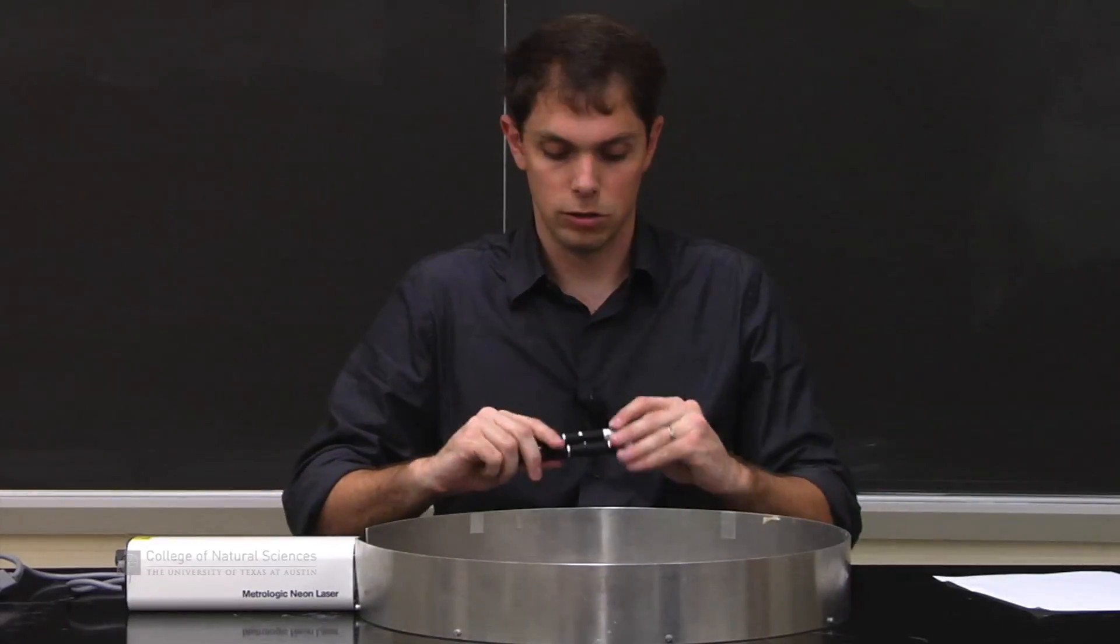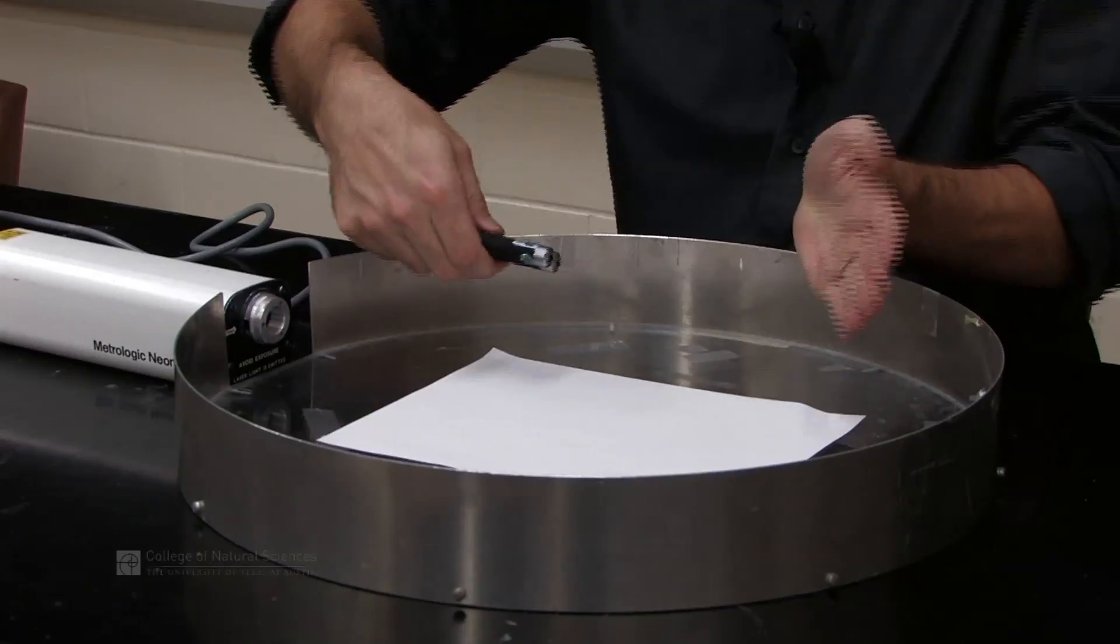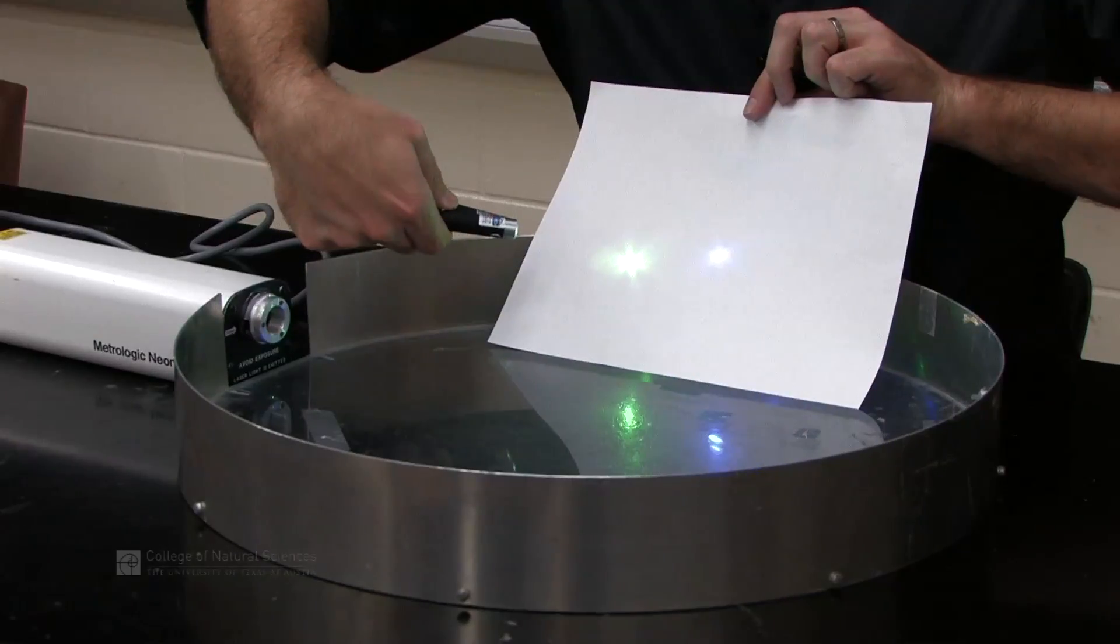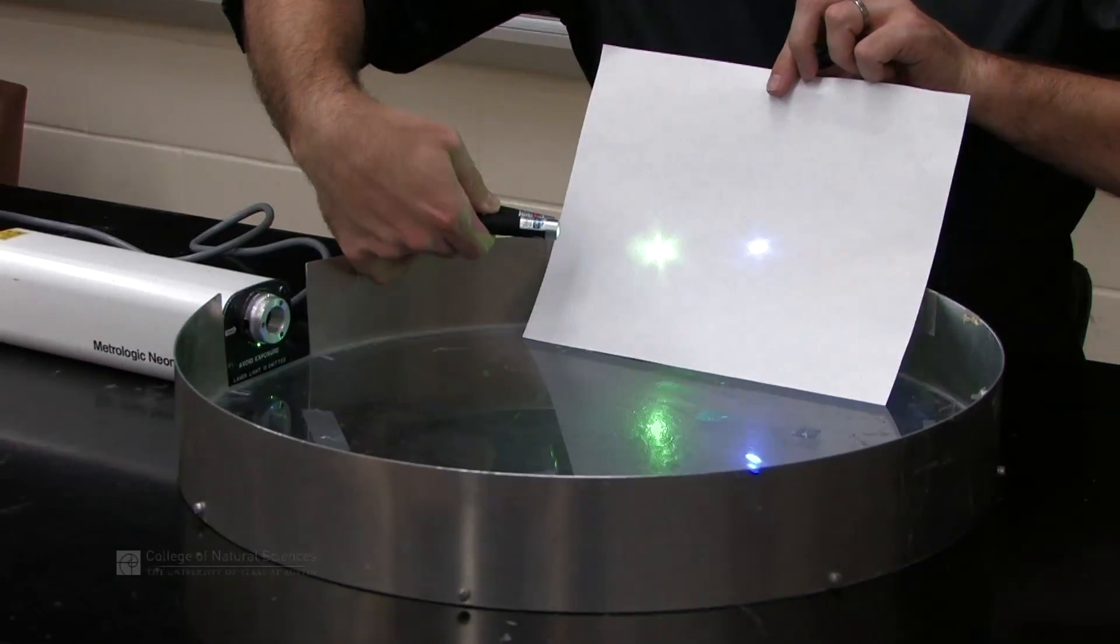Last but not least, these are two other laser pointers, different colors. This is a red laser. These are a green and a blue. If you notice, you see the green and the blue dot. If you look at them, it looks like the green dot is a little bit brighter than the blue.